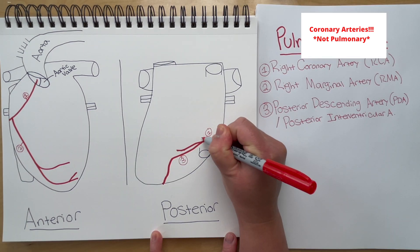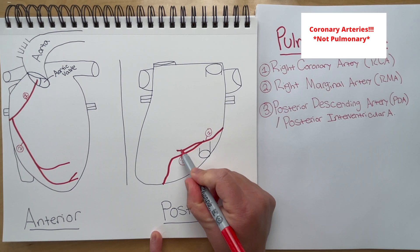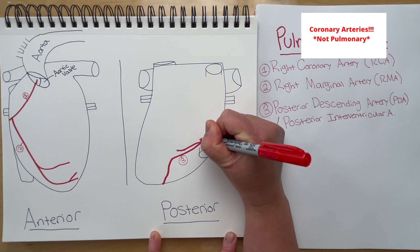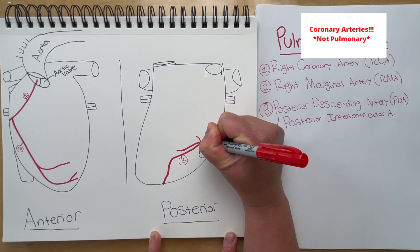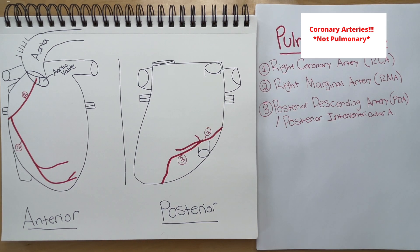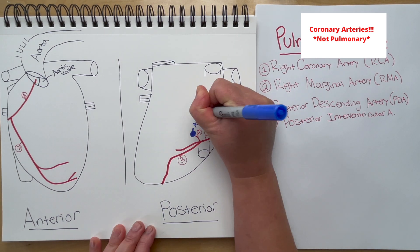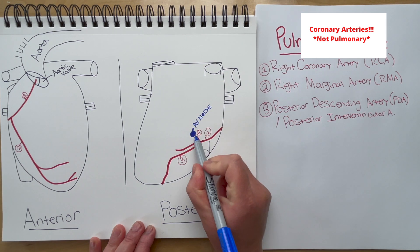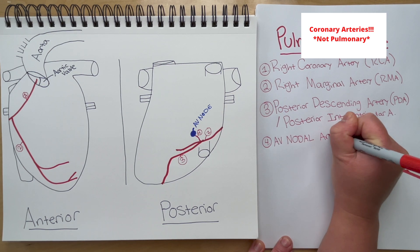Next we have this area called the crux — C-R-U-X. It's called that because it makes sort of a cross with these two arteries crossing. The area where these two arteries meet is the crux, and this is where there's an extension of a small artery called the AV nodal artery — the artery that takes blood to the AV node.